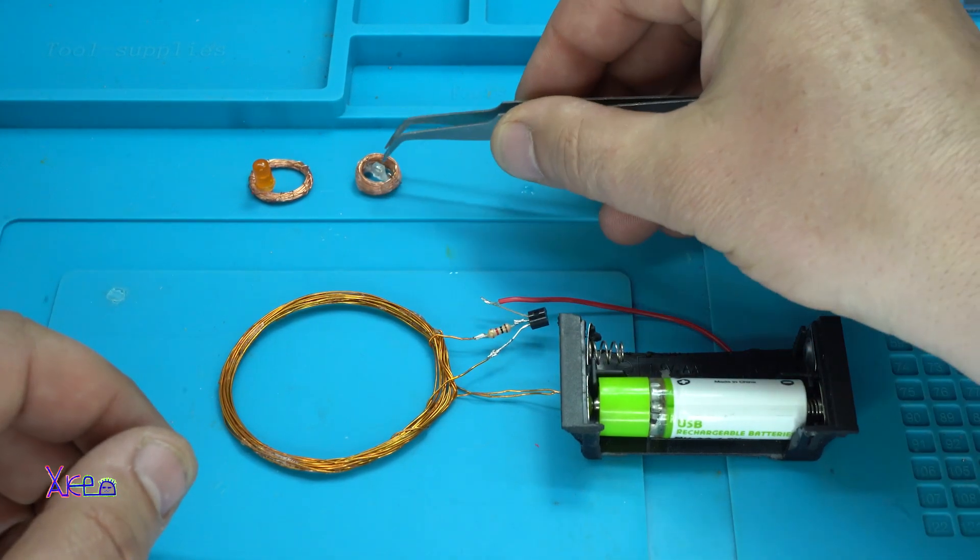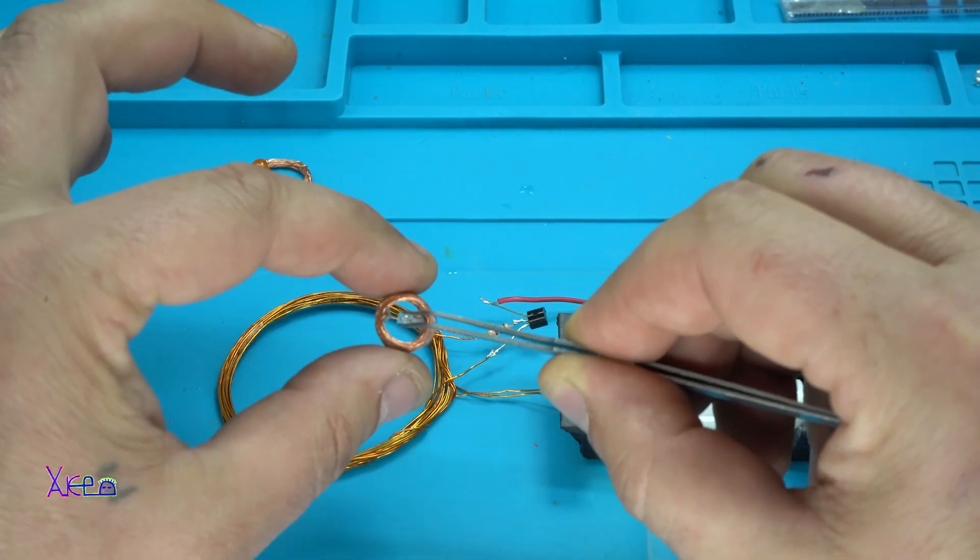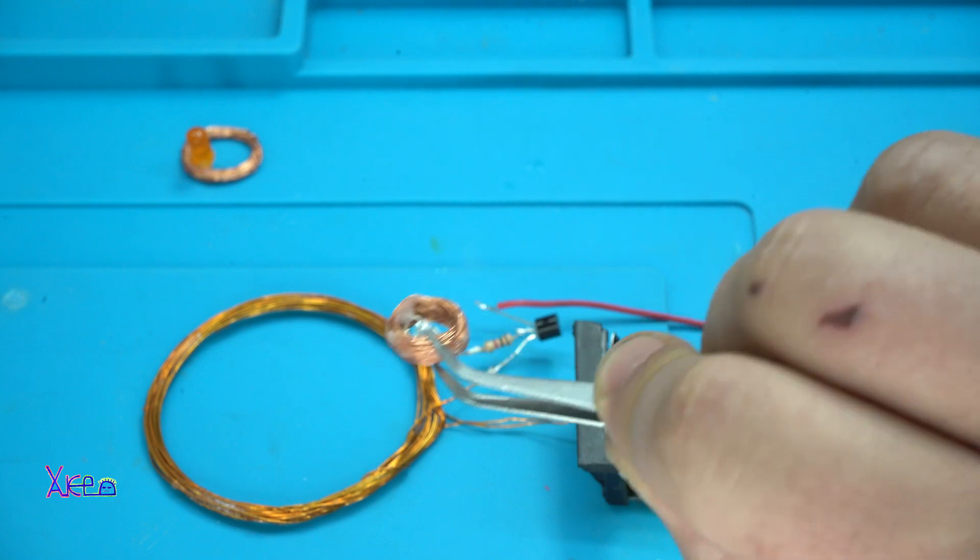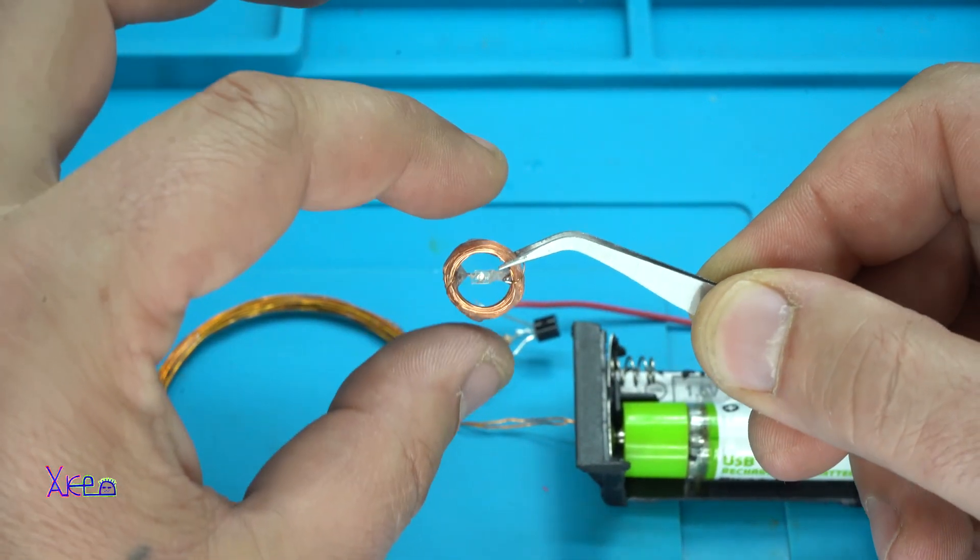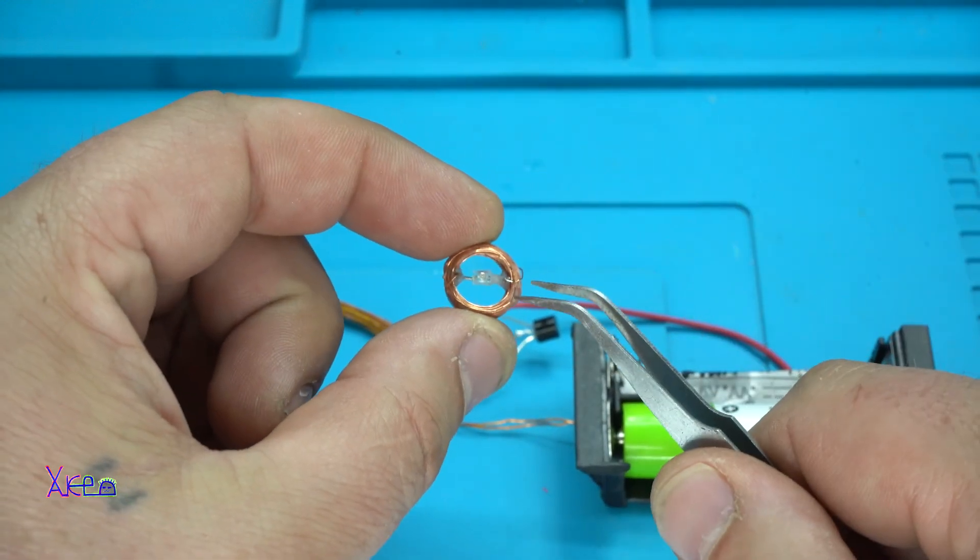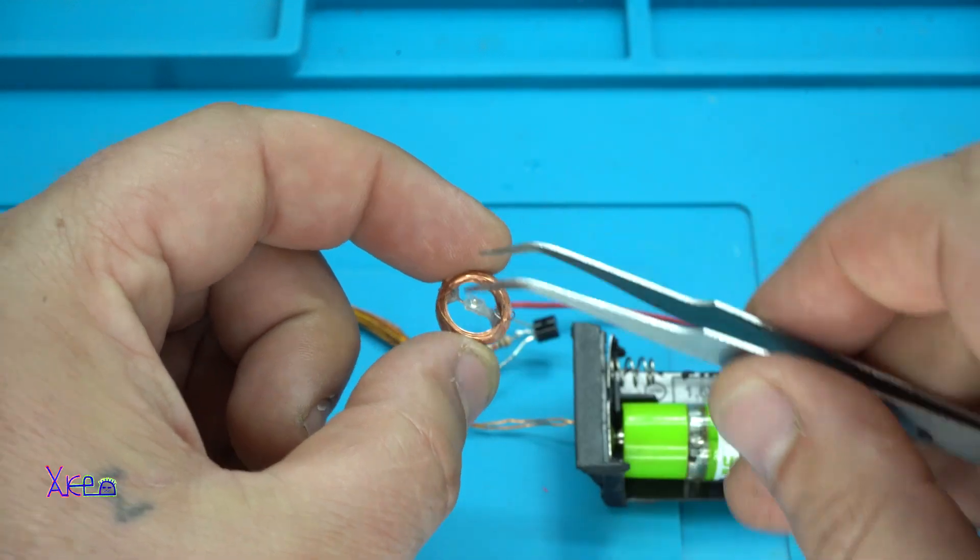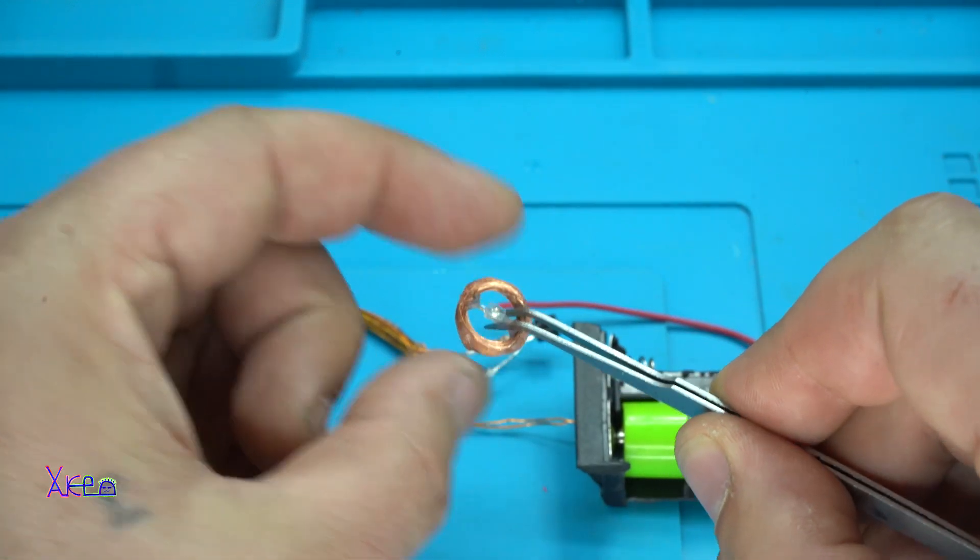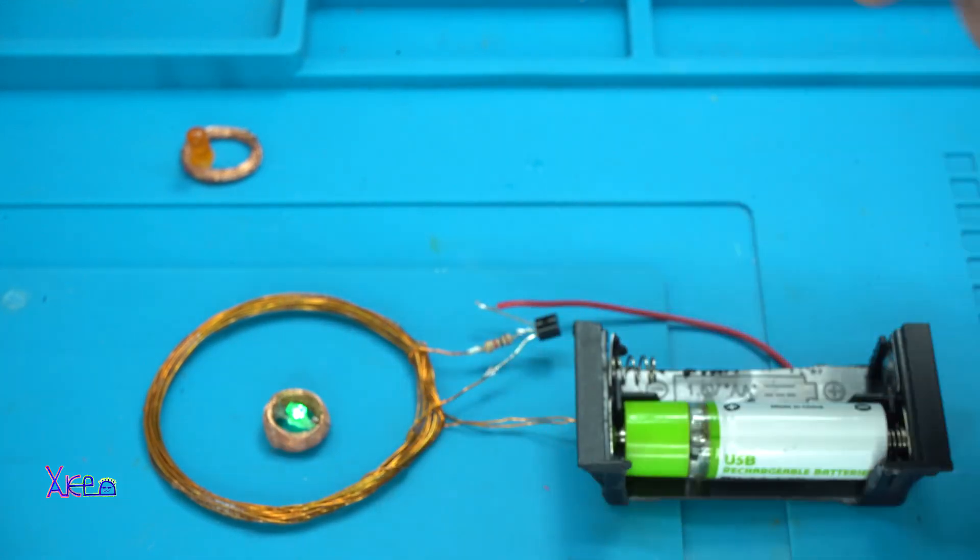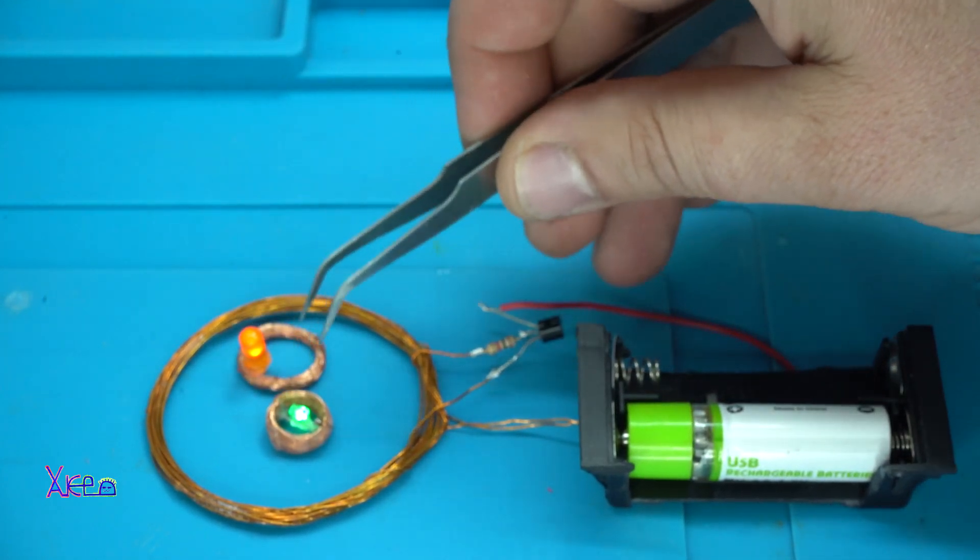So I made a very small wireless receiver coil. Here it is. It's an ordinary LED and on the ends of the wires are soldered. Let's try it now. What do you say about that? Wireless LEDs.